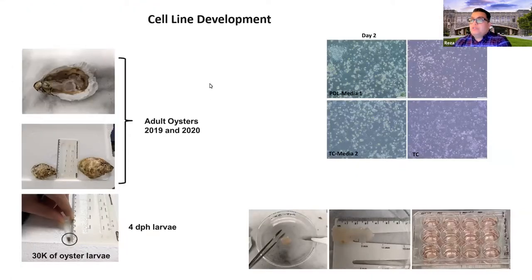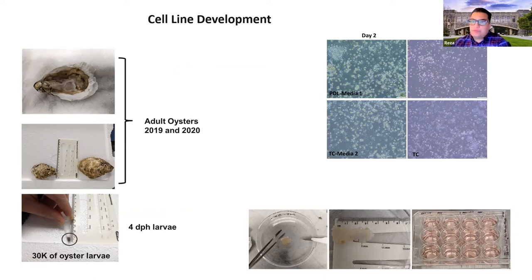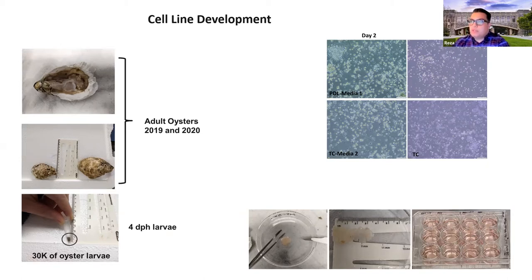We have been working on cell line development from oyster, focusing on different sexes and different life stages from larva to adult oyster. We got very interesting results working with oysters at different ages. Contamination was one of the major issues, but we developed protocols to reduce that problem. We've been trying different types of serum — not bovine serum, but serum we made ourselves in our lab. This project is almost done and we're ready to publish. This is also related to Ocean Taste, which has also been developing many different cell lines.